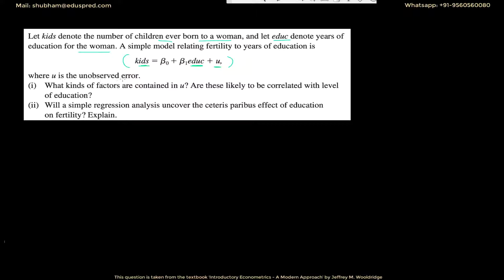The first part of the question is: what kind of factors are contained in U? The U term contains those factors that affect the dependent variable — in this case, 'kids' — but are not already included in the model. Education is already included, but it's not the only factor that affects the number of children ever born to a woman. All those factors not taken into the model are part of this error term.